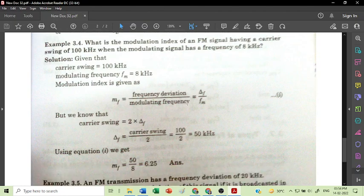Now from this first equation, Mf equals delta F by Fm. Therefore Mf equals delta F, which has been found to be 50 kHz, so 50 upon 8 is 6.25. Therefore modulation index is 6.25. Thank you.